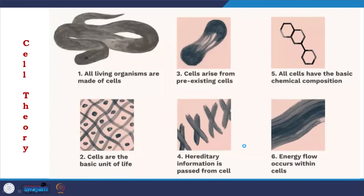In cell theory they made some key postulates: all living organisms are made of cells; cells are the basic unit of life; cells arise from pre-existing cells; hereditary information is passed from cells; all cells have the basic chemical composition; and energy flow occurs within the cell.